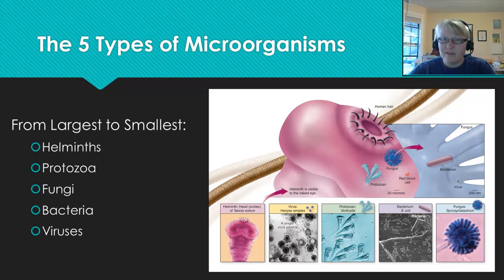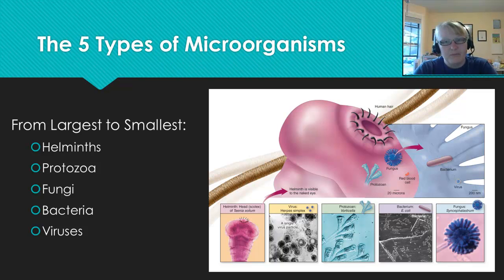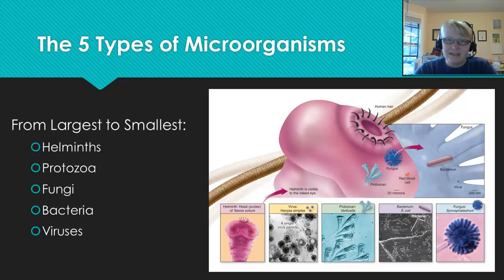We have five types of microorganisms broken down into two groups: eukaryotes and prokaryotes. Eukaryotes are much larger cells and form the groups helminths, which are worms, protozoa, and fungi. Prokaryotes are represented by bacteria, and the non-living particles are viruses. Chapters 3, 4, and 5 will talk about each of these groups more in depth, but let's take some time to familiarize ourselves with the major groups and cell types.